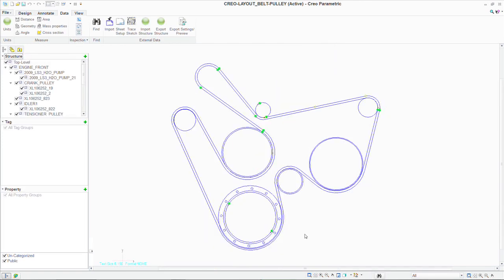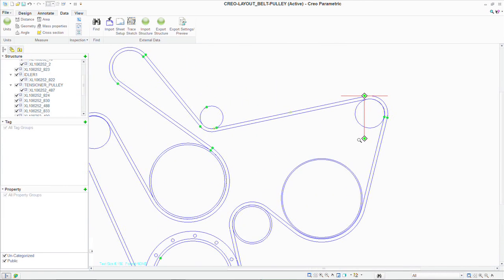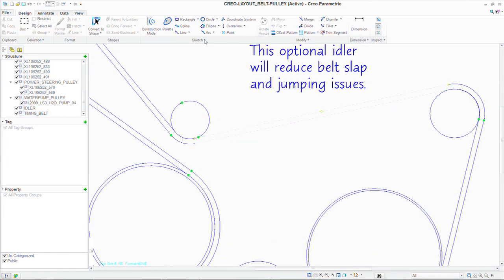Creo Layout is a conceptual engineering solution that will combine and leverage the benefits of traditional 2D and 3D design processes by providing three things.